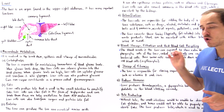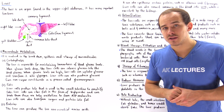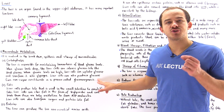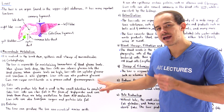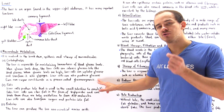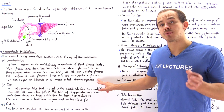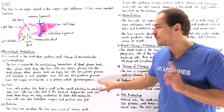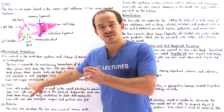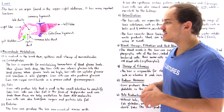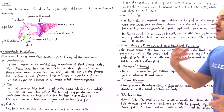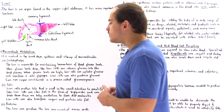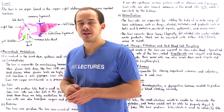Glucagon also stimulates liver cells to undergo a process known as gluconeogenesis — the production of glucose from non-sugar constituents such as lactic acid and other precursors. Now let's move on to fat metabolism.